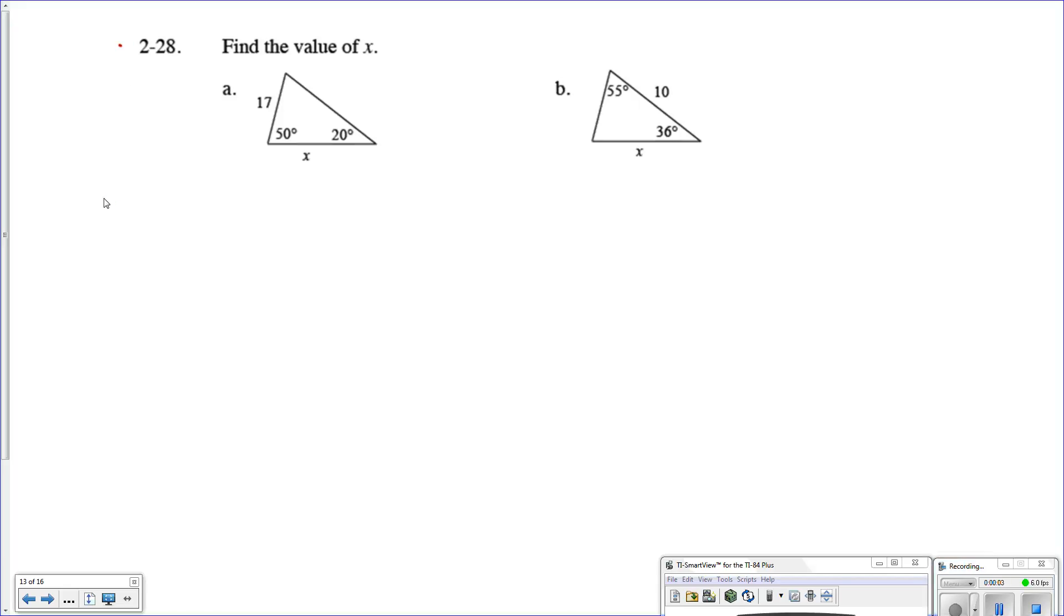From 2-28, find the value of x. So, letter A, we've got our triangle here. We've got a 50 degree angle, a 20 degree angle, that makes 70 degrees, which means that the angle up here is going to be 110 degrees, just filling it in because we know what it is.